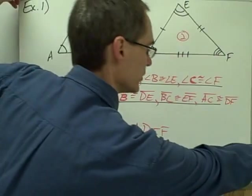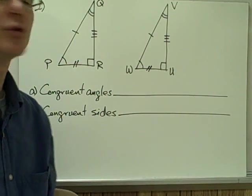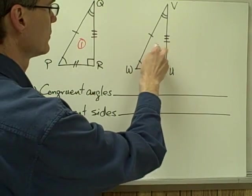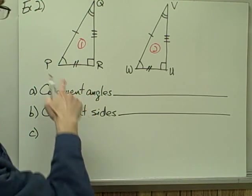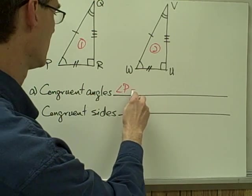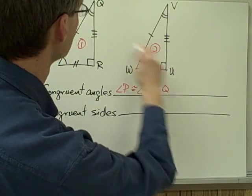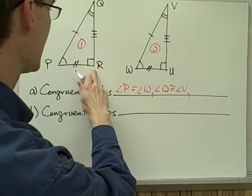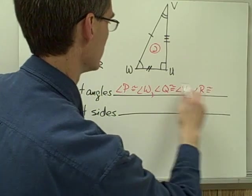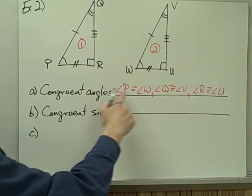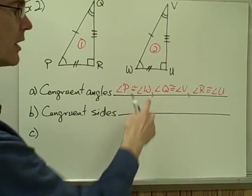Let's take a look at example number two. Here once again I have two triangles — triangle number one and triangle number two — with some congruence markings. Let me write down all my pairs of congruent angles. Angle P and angle W are congruent. Angle Q and angle V are congruent. And angle R and angle U — since those are both right angles — angle R is congruent to angle U. I'm going in order: an angle on triangle one and then an angle on triangle two.